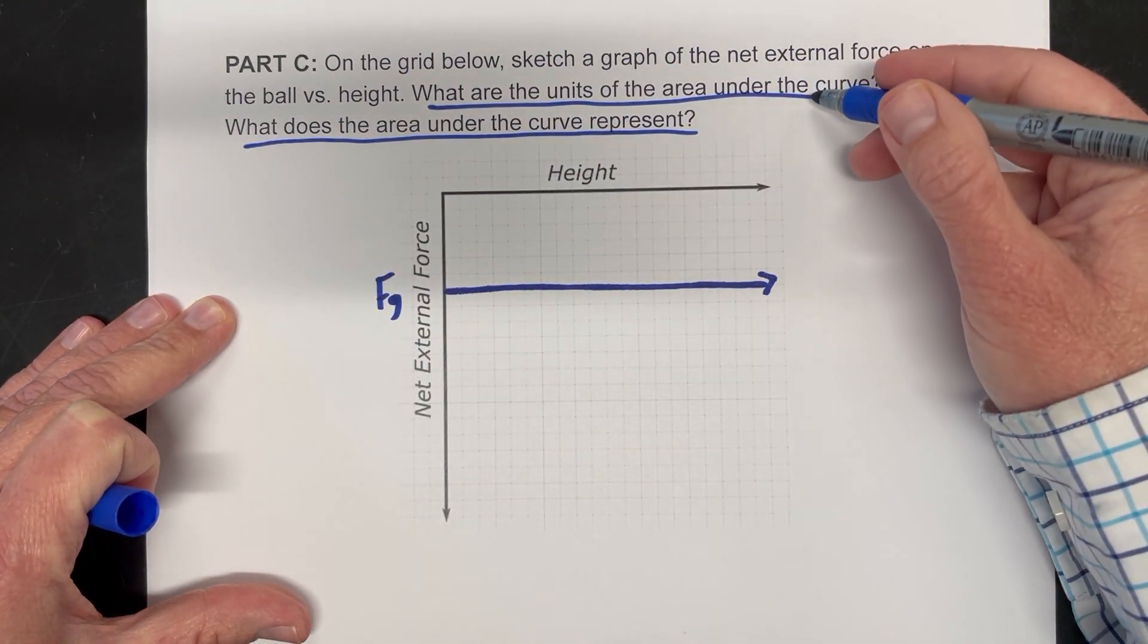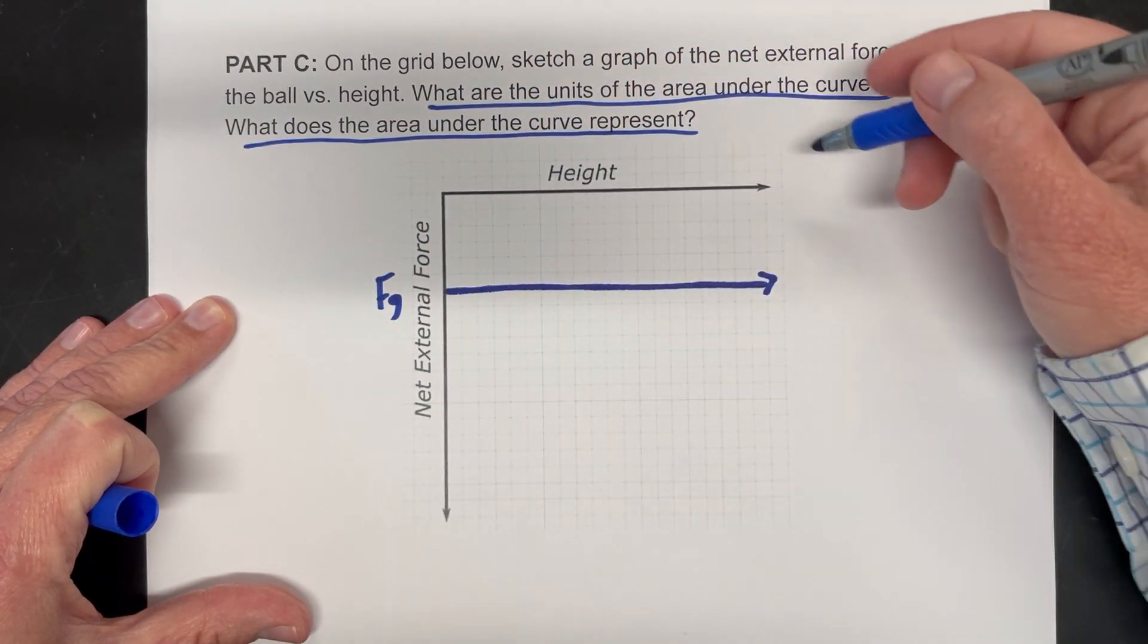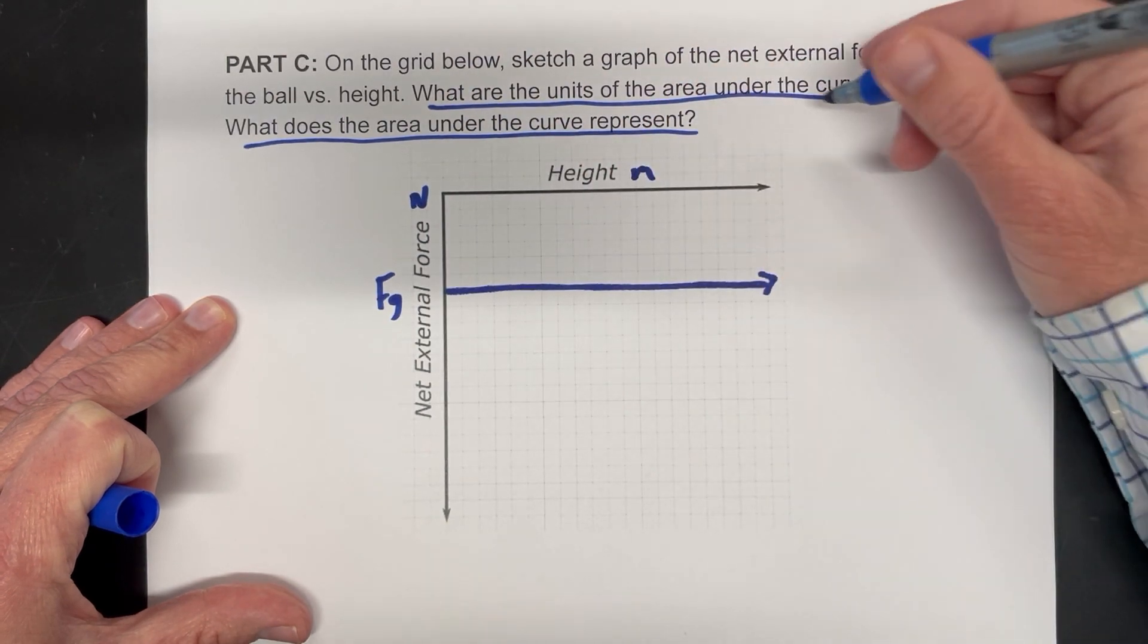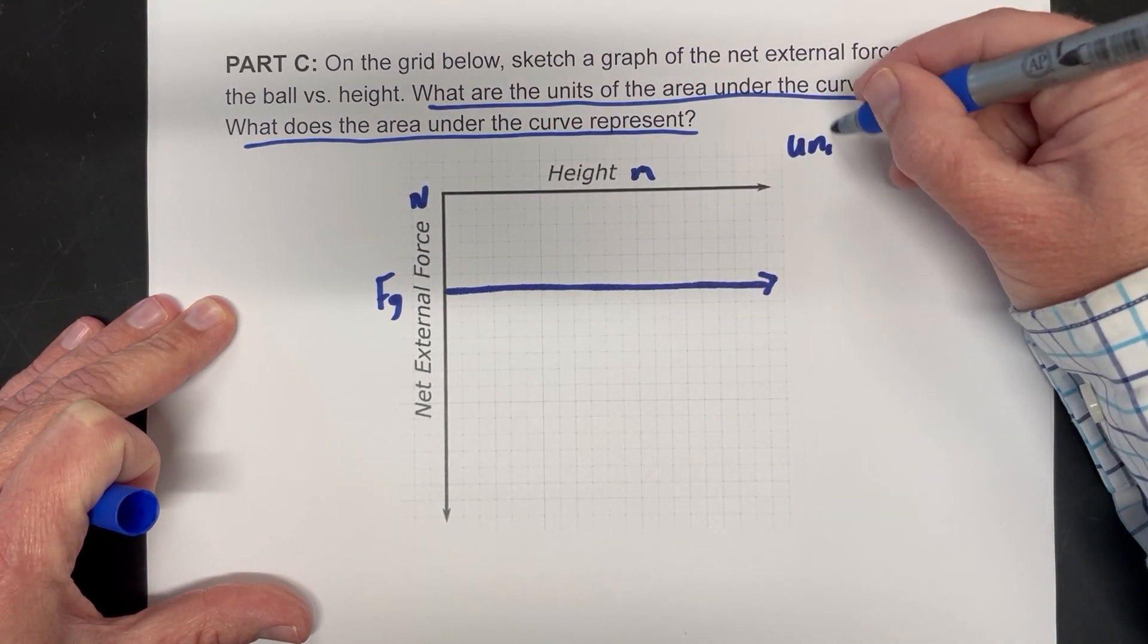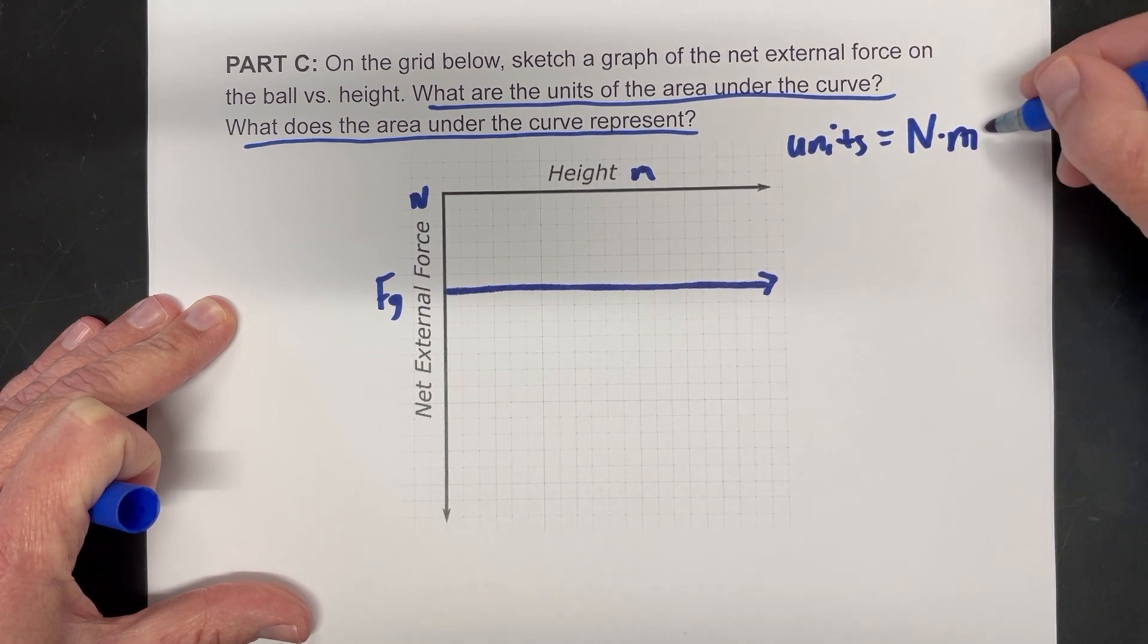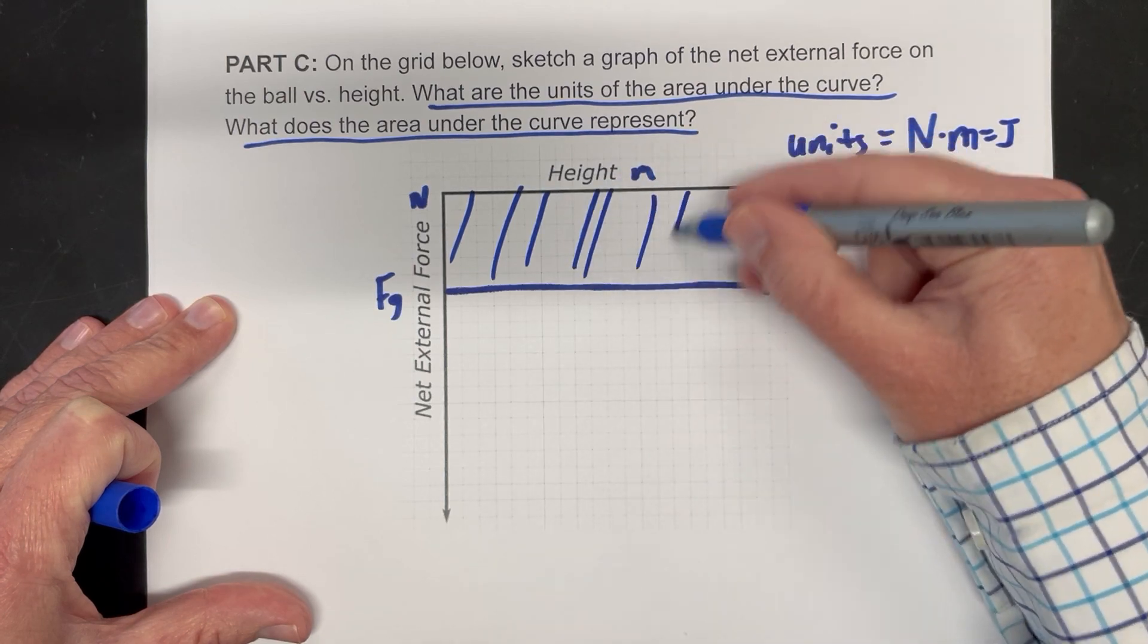And so what are the units for the area? Well, to figure that out, we would do our force times our height. This would be measured in newtons. This would be measured in meters. So the units would be newton meters, or in other words, joules.